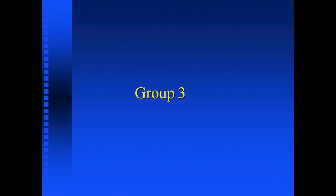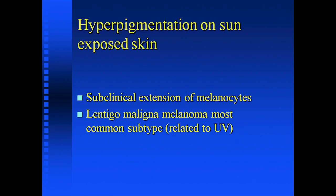Group three: hyperpigmentation on sun-exposed skin. This can be a real problem — subclinical extension of melanocytes. This is something you see primarily in the lentigo maligna type of melanoma. The definitions of what constitutes an adequate margin in melanoma are rather elastic; they've changed over the years. There are now recommendations that melanoma margins may have to be more than five millimeters if they're in situ, primarily because of studies that Mohs surgeons have done showing subclinical extension on sun-exposed facial skin.